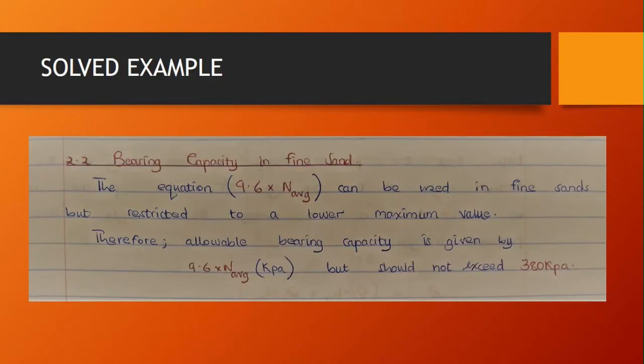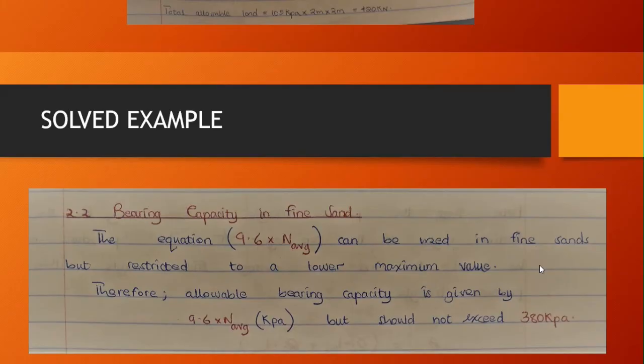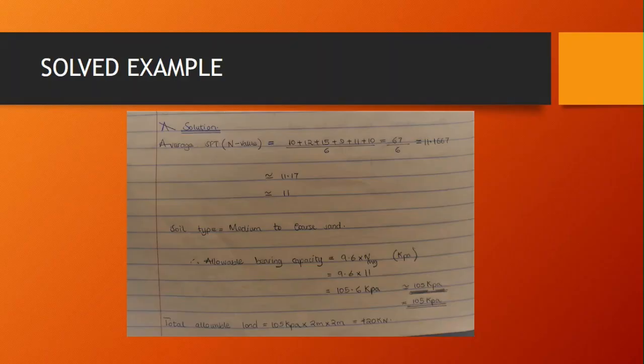You must keep also in mind that the bearing capacity in fine sand, the equation 9.6 by N average, can be used in fine sands but is restricted to a lower maximum value. Therefore allowable bearing capacity is given by 9.6 N average in kilopascals but should not exceed 308 kPa. So meaning the value we got here, which is 105 kilopascals, is satisfactory.